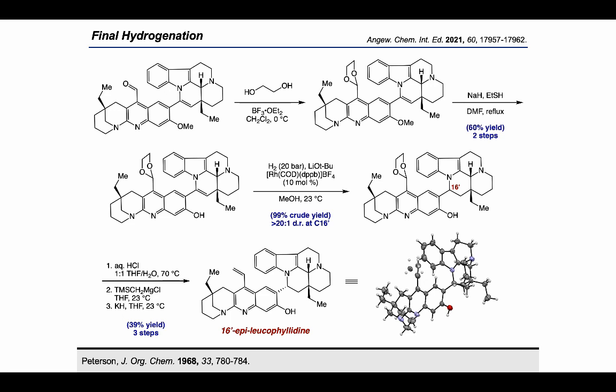Finally, we performed acetal cleavage followed by Peterson olefination to obtain a product with identical high-resolution mass to the natural product. However, the NMR spectra did not match those in the isolation paper, so we performed recrystallization to obtain single crystals for X-ray analysis. The results indicated that we had obtained an epimer of the natural product, with C16' having the opposite stereochemistry. Attempts to epimerize this center were unsuccessful, and further investigation of Csp3–Csp2 coupling strategies is ongoing in the Stoltz lab.